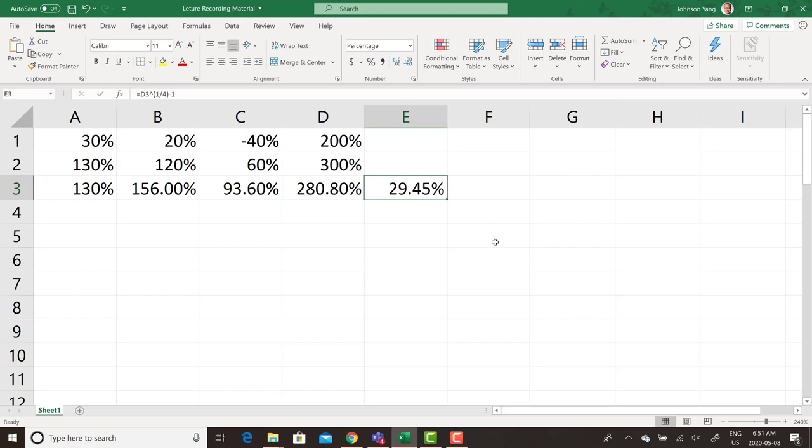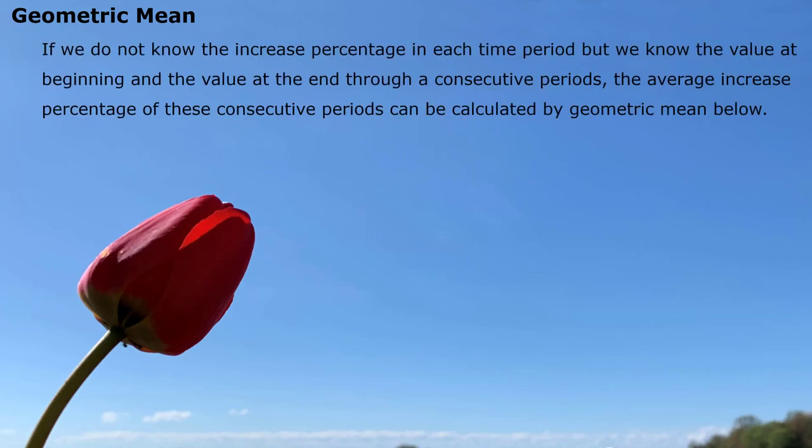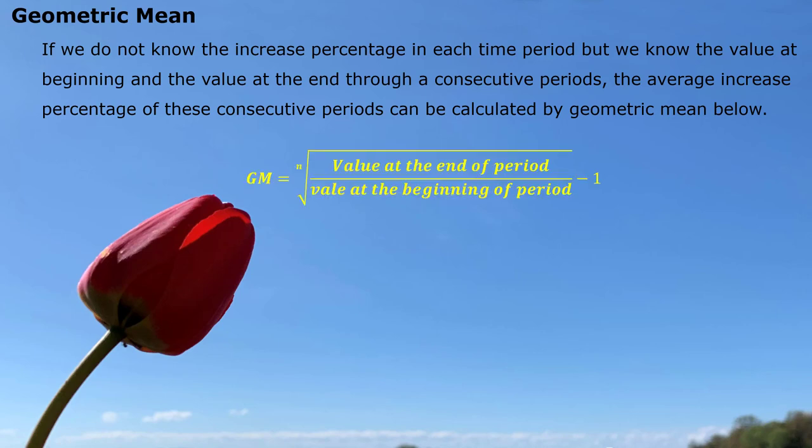That is the average percentage increase for each year. If we do not know the increase percentage in each time period, but we know the value at the beginning and the value at the end through consecutive periods, the average increase percentage of these consecutive periods can be calculated by geometric mean below. So we use the ending value divided by the beginning value, and then we do the nth root, and then subtract 1. Or, alternative way, we do 1 over n exponent. On calculator, that's how we operate.